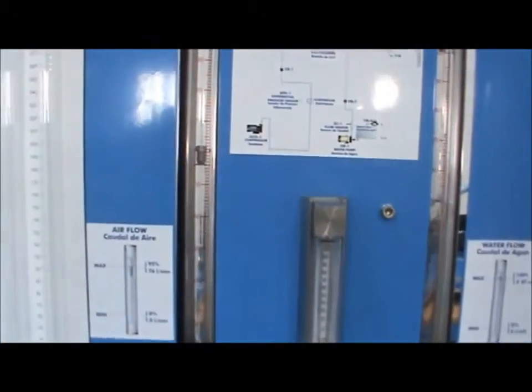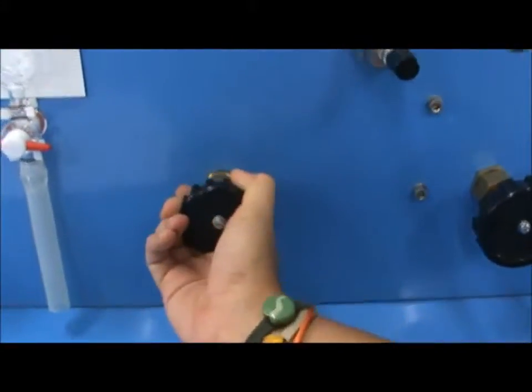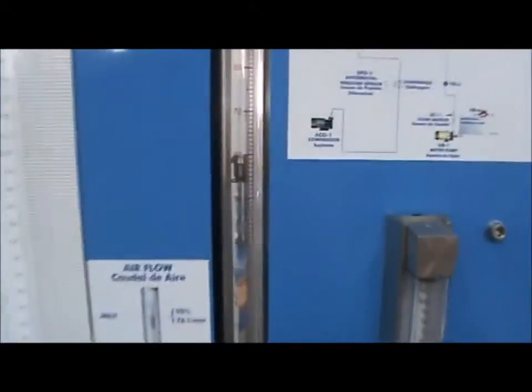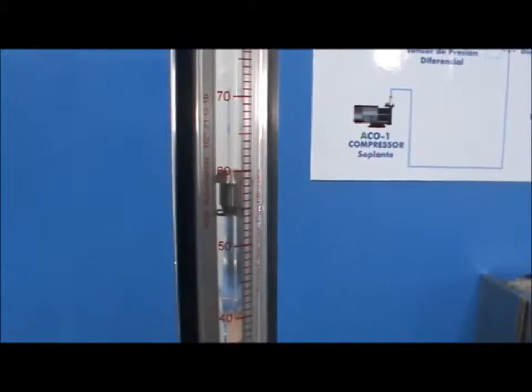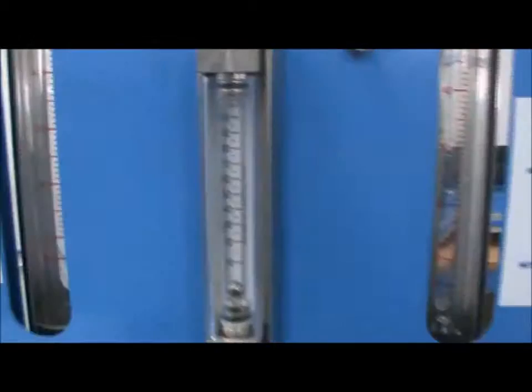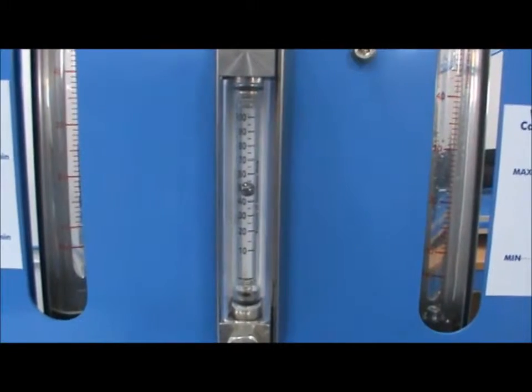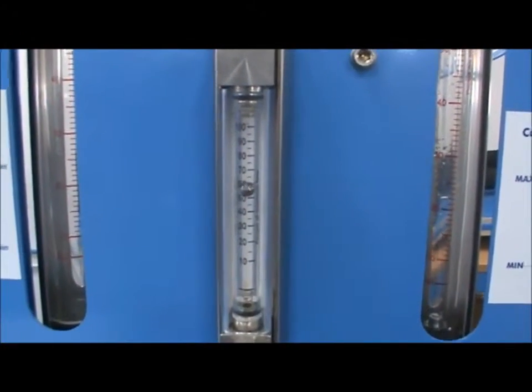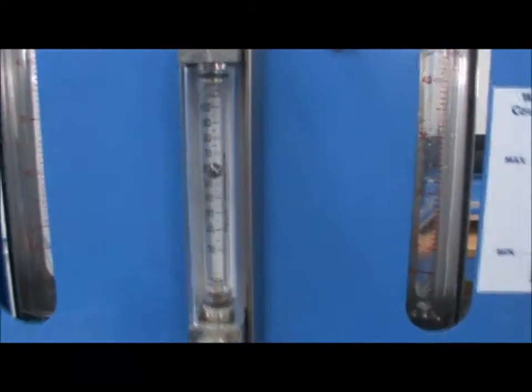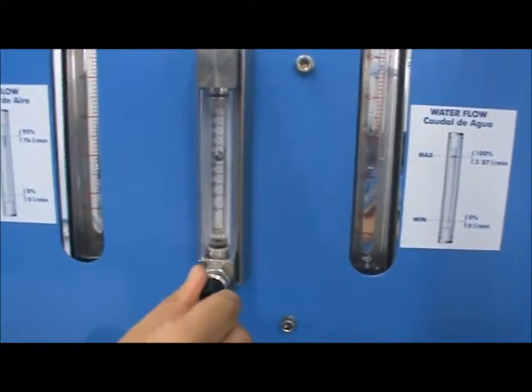Turn on the airflow by activating the pump using the software, and adjust the flow to the desired value, 60% for example. Next, open the CO2 tank providing one bar of pressure to the unit, and adjust the flow as needed. In this experiment, we will use 40%.